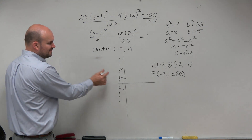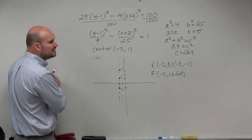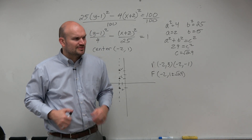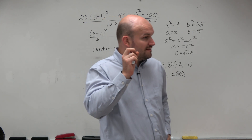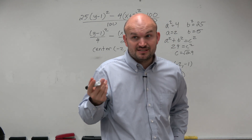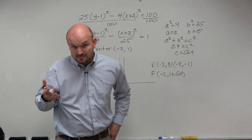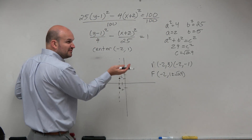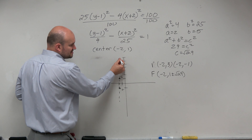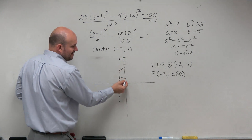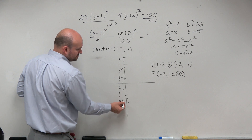Let's sketch where these foci should be. The square root of 29 — well, we know the square root of 25 is 5, and the square root of 36 is 6. So it makes sense that the square root of 29 is somewhere between 5 and 6 — roughly 5 and some change. So going up from the center 1, 2, 3, 4, 5, 6 — it's between 5 and 6. And going down 5 to 6 — it's somewhere in there.